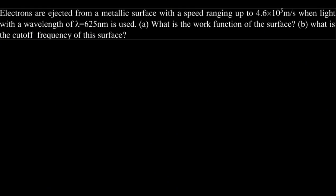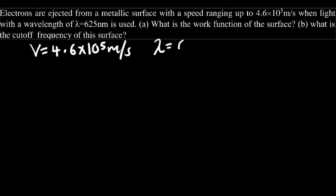Part A: What is the work function of the surface? And Part B: What is the cutoff frequency of this surface? So we have speed given as 4.6 times 10 to the power 5 meters per second, and we have a wavelength of 625 nanometers.